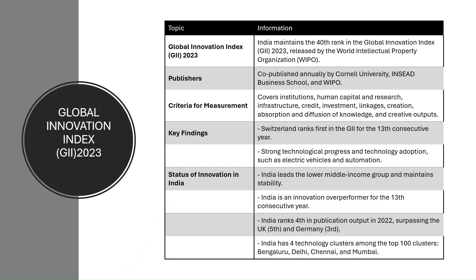India maintains the 40th rank in the Global Innovation Index 2023, released by the World Intellectual Property Organization (WIPO). Switzerland ranks first for the 13th consecutive year. India also ranks fourth in scientific publication output in 2022, surpassing the UK and Germany.